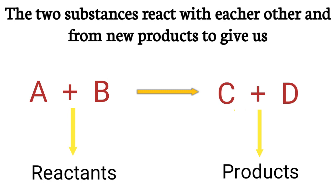A plus B. A reacts with B to form a product C plus D. A plus B is a reactant and C plus D is a product.